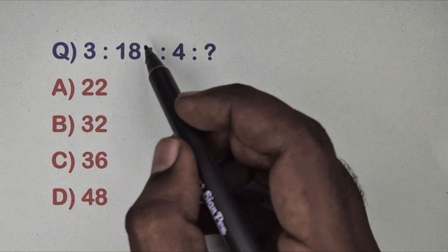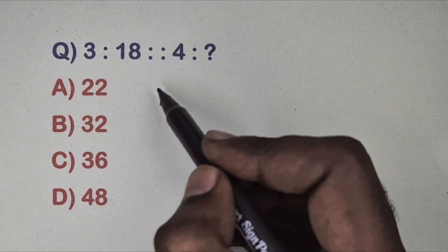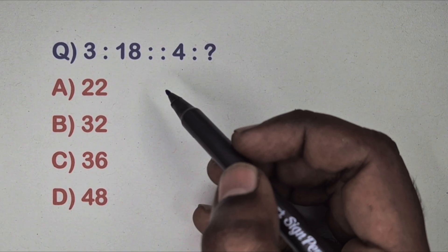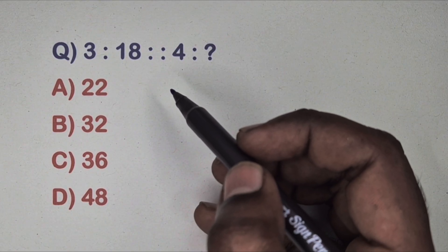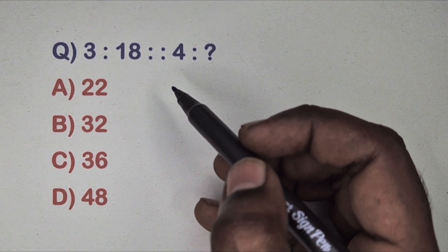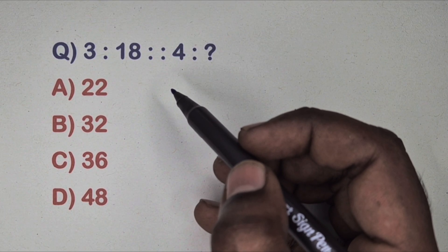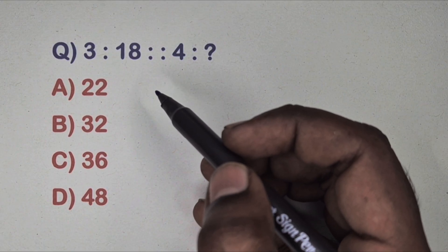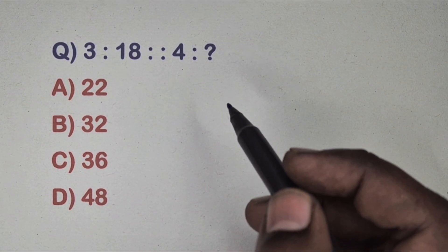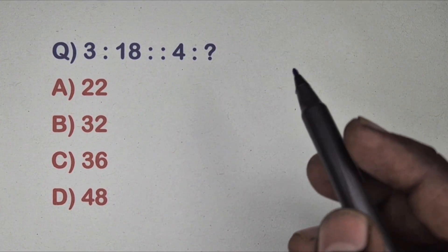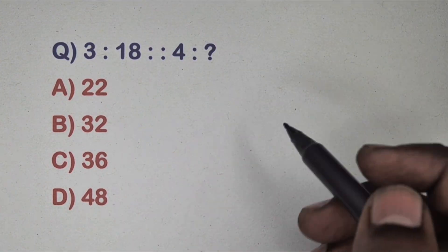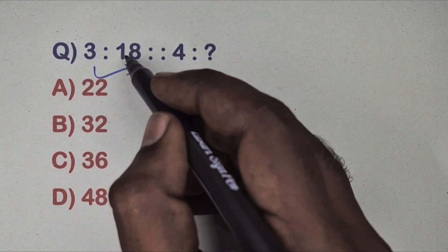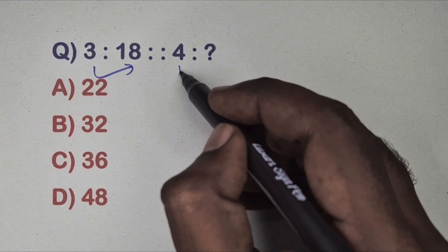Hi friends, this is an analogy video. In this video we will learn different types of analogy questions and their properties. Please watch the entire video so you can understand different types of analogy questions. Let's start — first question: 3 is related to 18 and 4 is related to which number? Options are given.